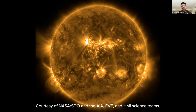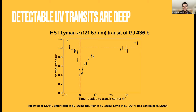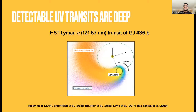Observing atmospheres in extreme or far ultraviolet can be hard. But what we do have going for us is that UV transits sometimes can be pretty deep. The most extreme case we have is for the warm Neptune GJ436b, for which we have a transit depth of around 50% in the blue wing of the Lyman-alpha emission. This was observed with Hubble.